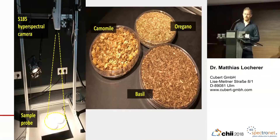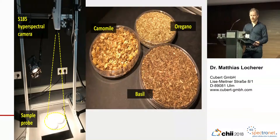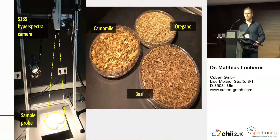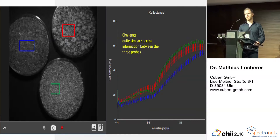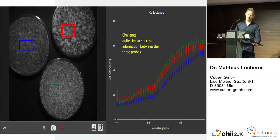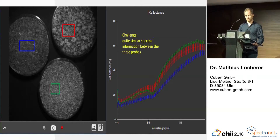I would like to show this on a little setup we made in our laboratory. In the upper part of the image you can see the S185 camera model, and below is the sample probe placed on a turntable. The sample probe contains some herbs like chamomile, oregano, and basil. From the camera point of view it looks like this: on the left side you see the panchromatic image, and on the right side some spectra displaying the pixels inside three rectangles. The spectral information is quite similar, so the question is whether we can distinguish these herbs relatively easily.